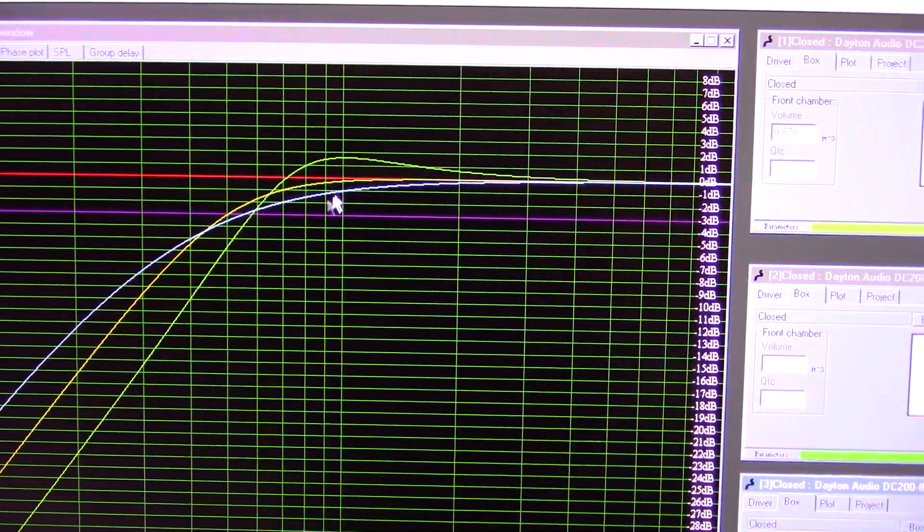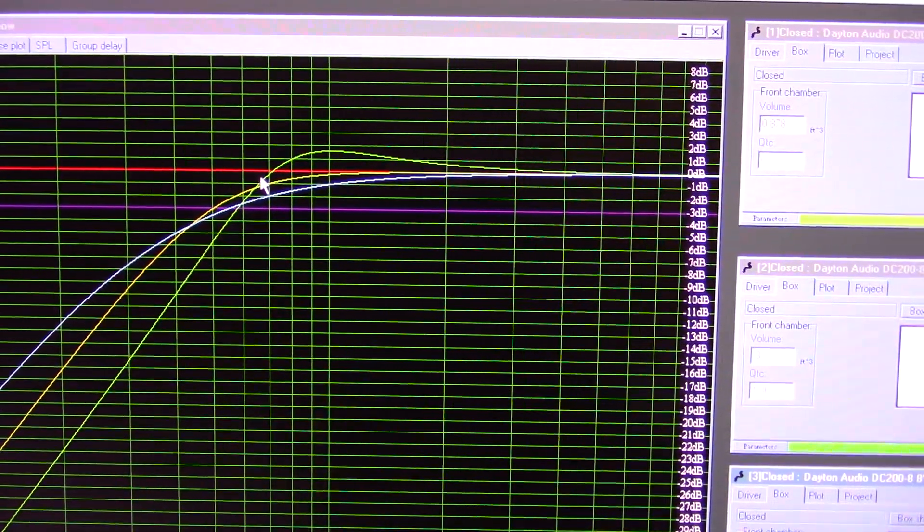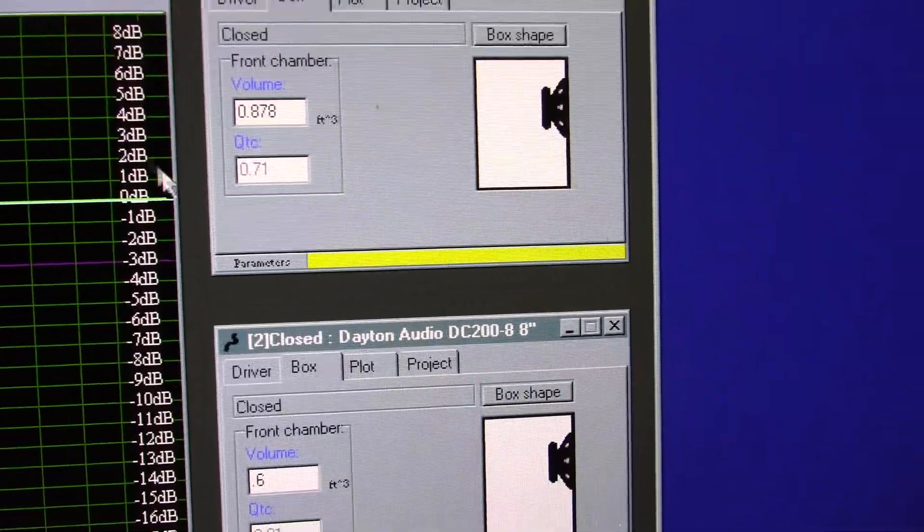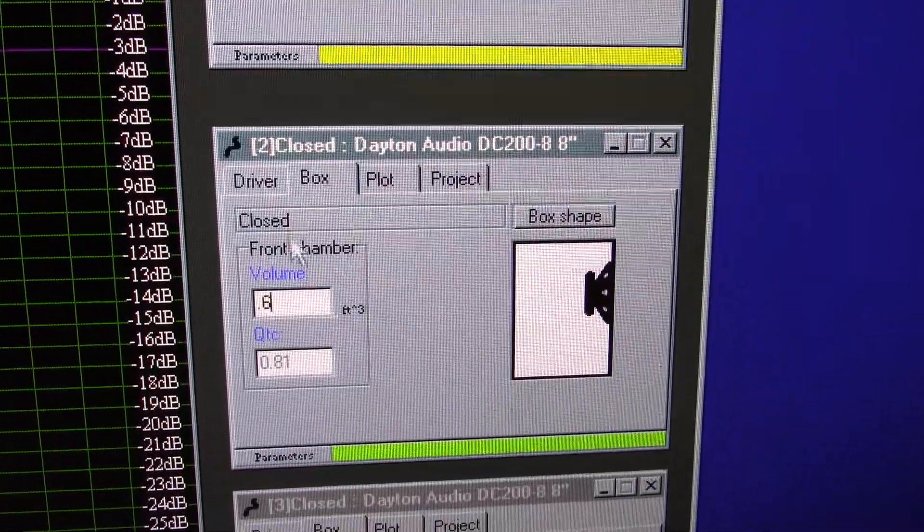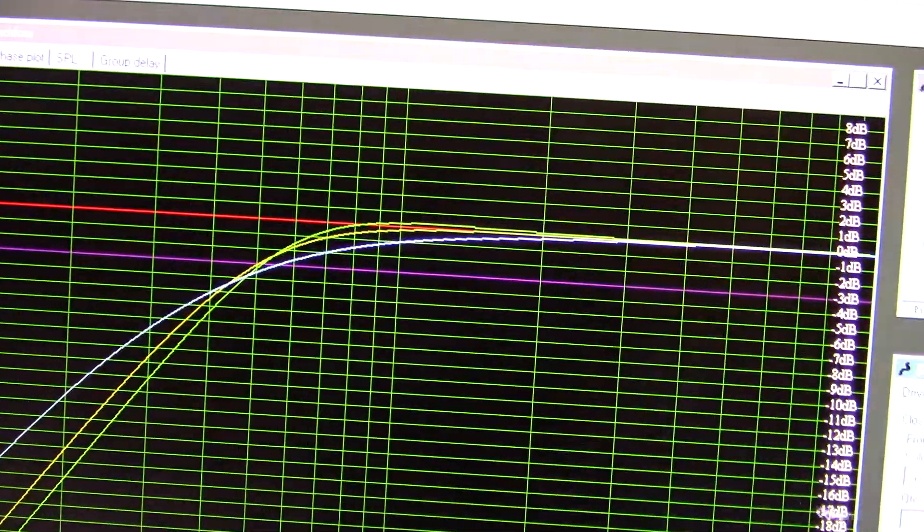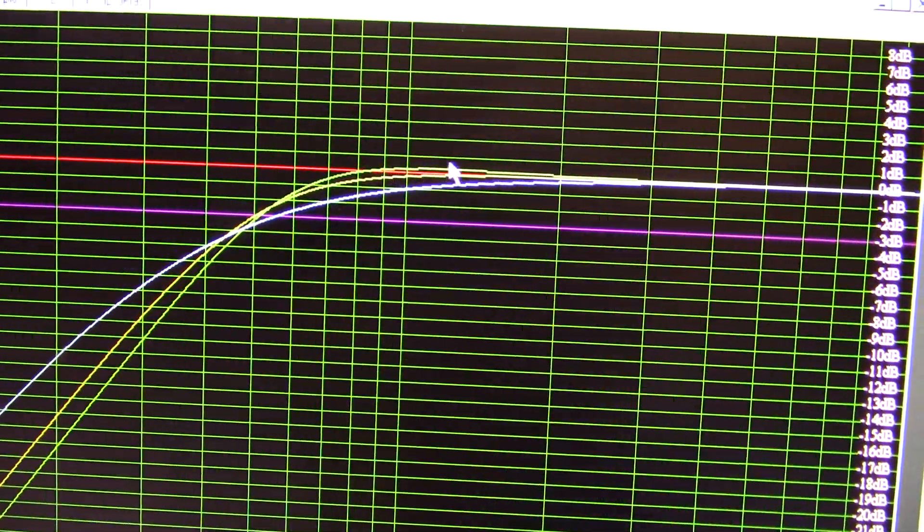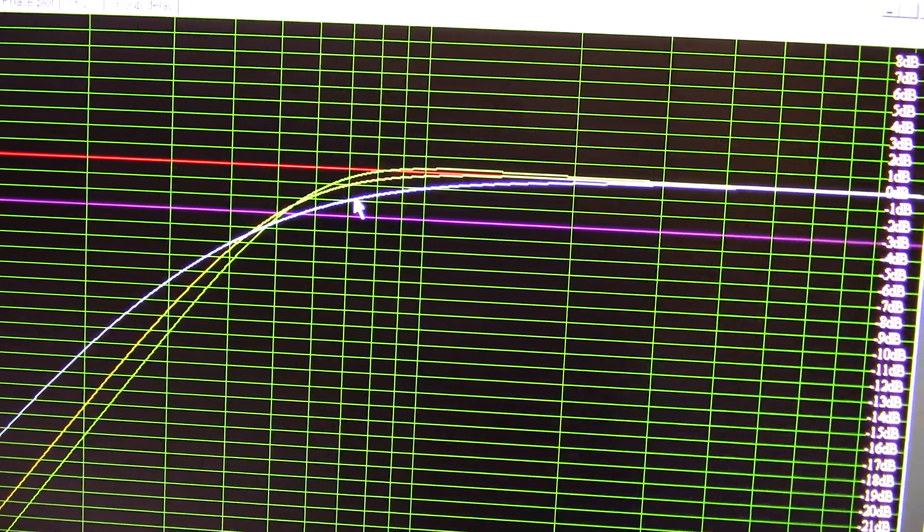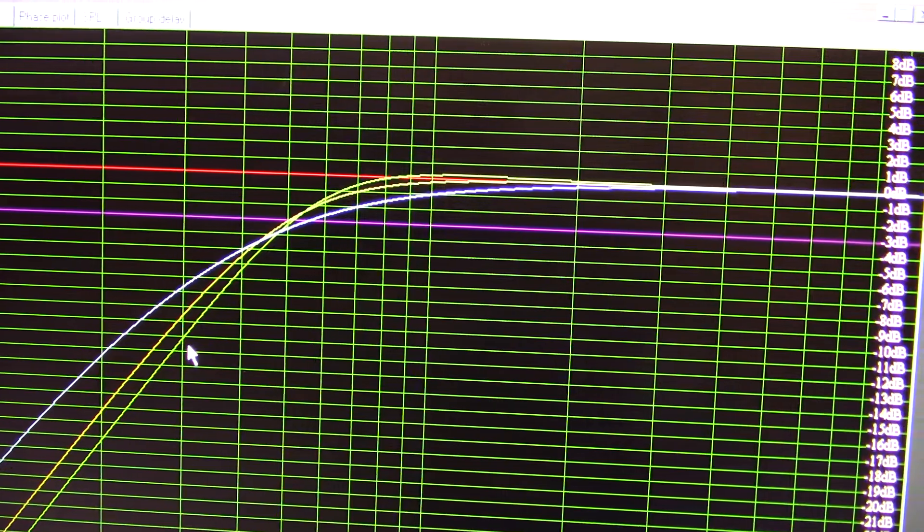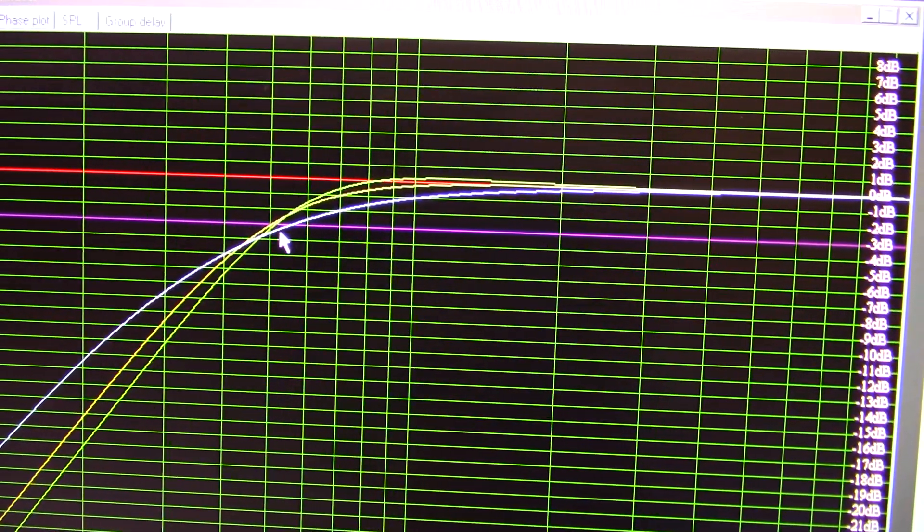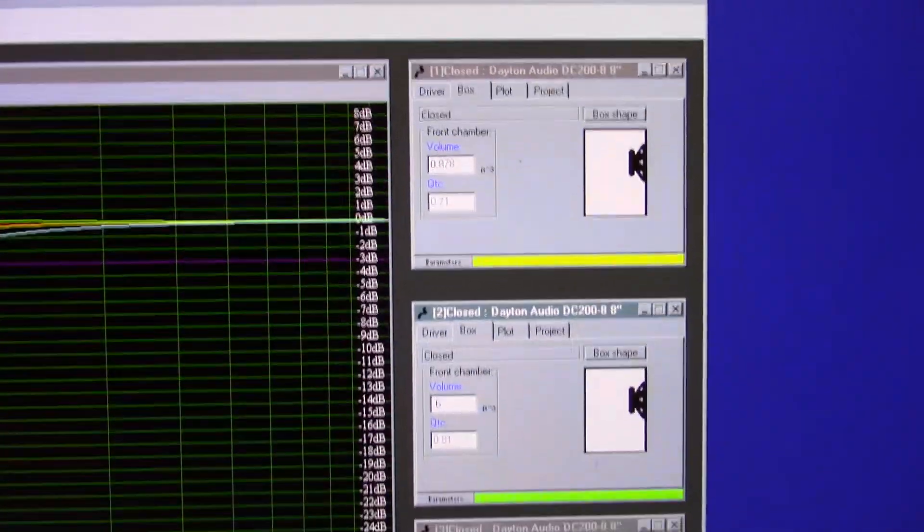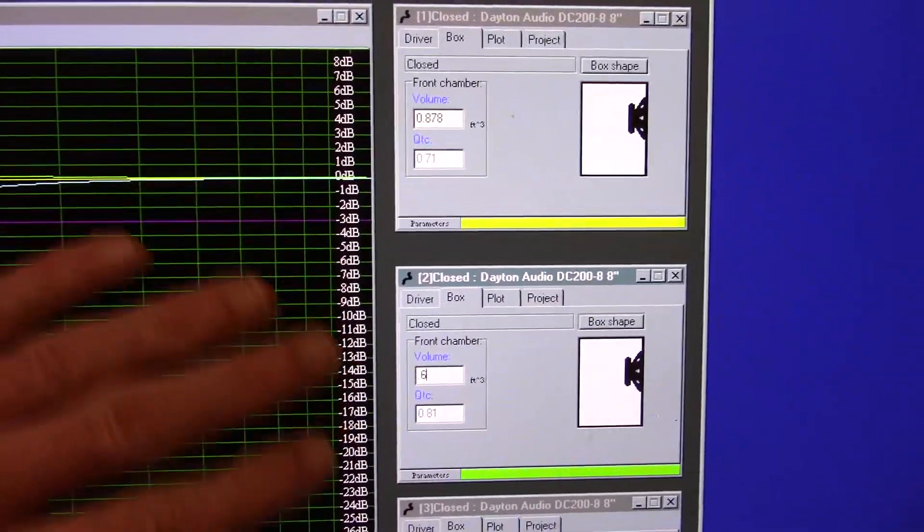Now, let's just say we want to go with a slightly smaller box than optimal. Okay, so, what I want to do here is compare a box size of 0.6 to our optimal box size of just under 0.9. And a 0.6 box gives us a QTC of 0.8. And our 0.8 QTC is this green line. And see, it's still pretty close. You do lose a little over a dB, which is not much, around 40 hertz. Our F3 point is virtually the same.